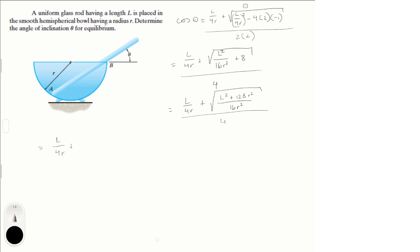L over 4R plus square root L square plus 128R square. Now this is outside of the square root. And all over 4.